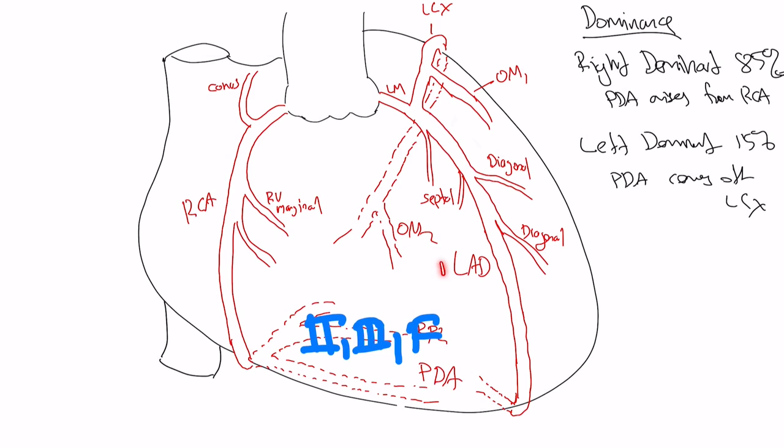When you're in these inferolateral segments, like these distal obtuse marginals, or perhaps there's another PL sitting over here, you're going to get some lateral involvement. Think of this as behind us here. That's kind of the inferolateral segment. That's going to show evidence of V5 and V6 often as these lateral leads.